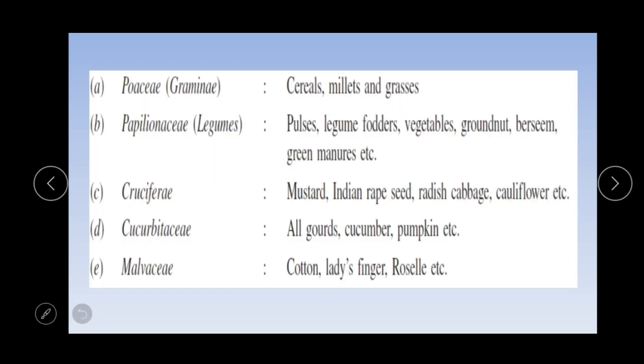Let's start. Poaceae, i.e. Gramineae family, includes cereals, millets, and grasses. Pulses, legumes, fodders, vegetables, groundnut, berseem, and green manure crops belong to Papillionaceae family, i.e. legumes family.